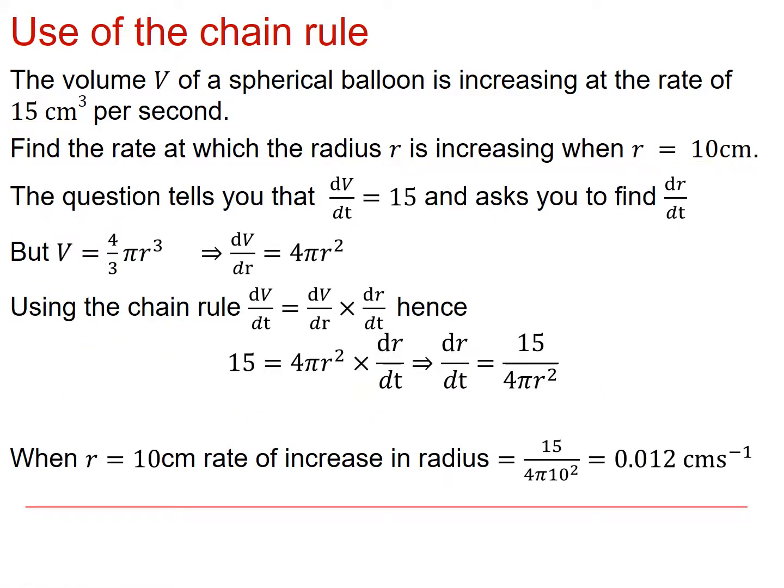There's that working written out neatly again. We know that, and we want to find that. There we've used the fact that the volume is 4 thirds pi r cubed to give us a rate of change with respect to r. And there we've used the chain rule to get an expression for dr by dt. And there we've worked it through to get our numeric value at 10 cm.